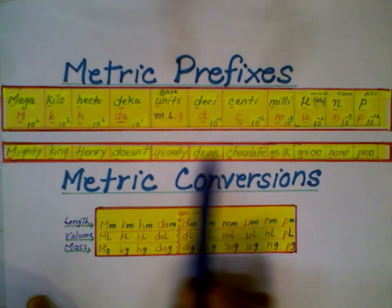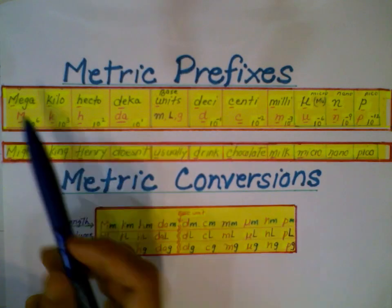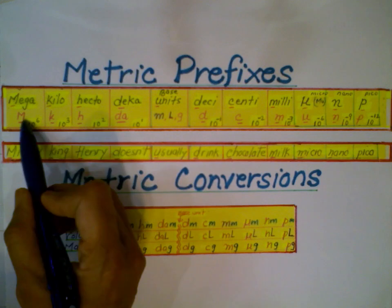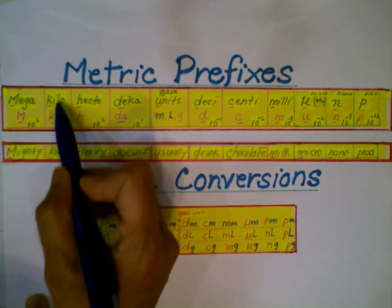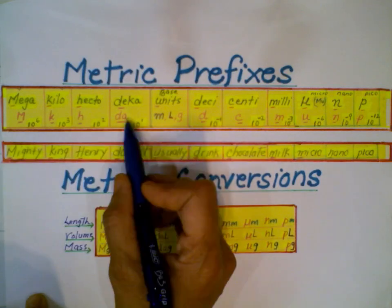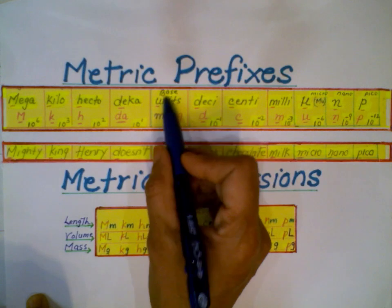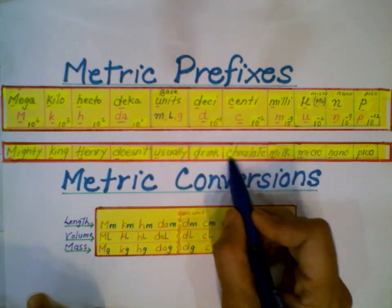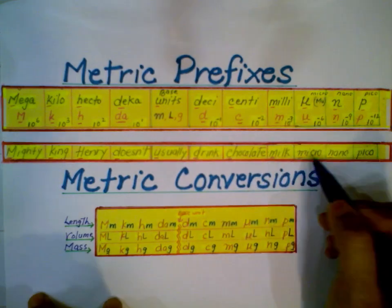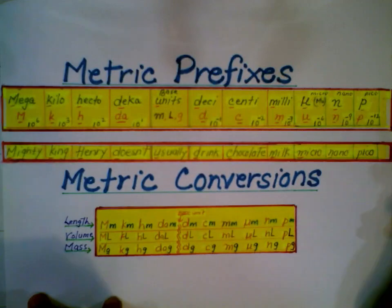This mnemonic will help you memorize the sequence of prefixes. Please pay attention to the first letter: Mighty = M = Mega, King = K = Kilo, Henry = H = Hecto, Doesn't = D = Deca, Usually = U = Units (base units), Drink = D = Deci, Chocolate = C = Centi, Milk = M = Milli, Micro = mu, Nano, Pico = P.